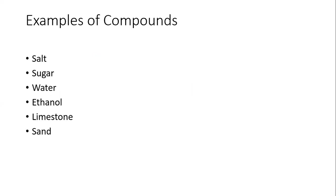Examples of compounds: salt is sodium chloride — two elements coming together. Sugar is C₁₂H₂₂O₁₁, also known as sucrose. Water is H₂O. Ethanol is C₂H₅OH — that's alcohol. Limestone is CaCO₃ — calcium carbonate. Sand is SiO₂ — silicon dioxide. All these are compounds because they are formed from a chemical process combining more than one element.